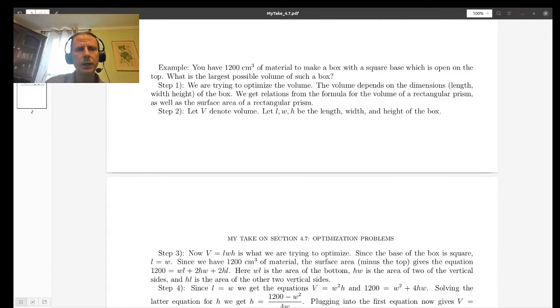So let's try to apply that first step to an example I got out of the book. In this example you've got 1200 cubic centimeters of some material in which to make a box with a square base which is to be open on the top and we want to find the largest possible volume of such a box. So this question is thankfully rather short so it's not too hard to read it and understand it.